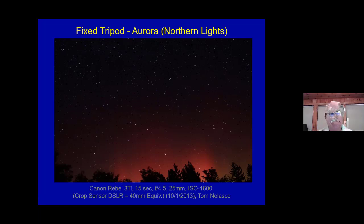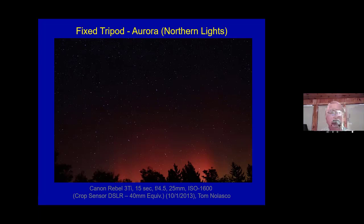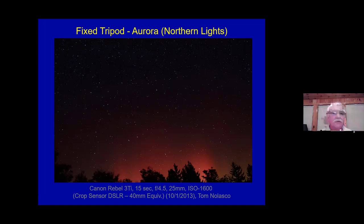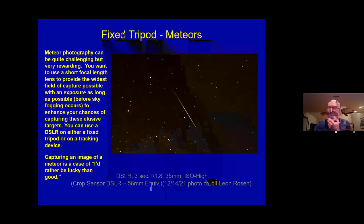All the images Tom is showing were taken with the kit lens that came with the Canon Rebel T3i — an 18-55mm and a 75-300mm telephoto. The lens is slow, typically f/4.5 to f/5.6, but the image quality is good. Going to a darker site like Cherry Springs makes a huge difference — you get far more stars in single-shot photography, which makes the results much more rewarding.